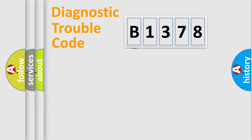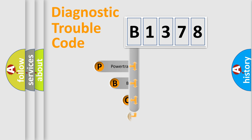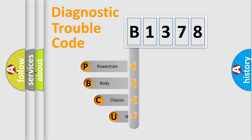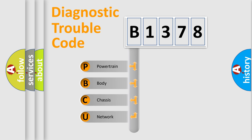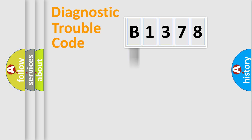Let's look at the history of diagnostic fault code composition according to the OBD2 protocol, which is unified for all automakers since 2000. We divide the electric system of an automobile into four basic units: Powertrain, Body, Chassis, and Network.